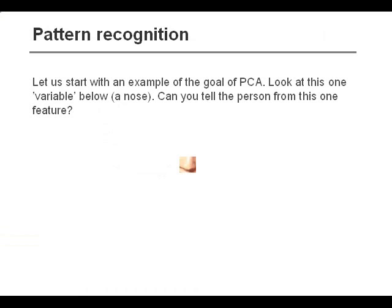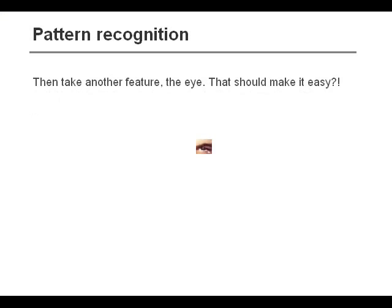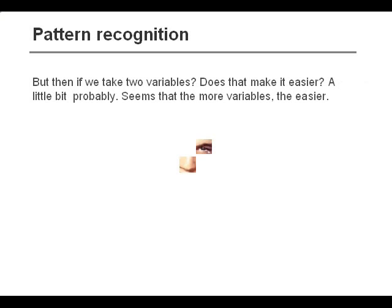Let's start with a simple example of how the brain works. If we want to recognize a face, we usually don't look at variables one at a time. Let's have a look at one variable or one feature — the nose — and try to figure out who that person might be. That's not very simple. But we could look at another feature, for example the eye, or we could look at both simultaneously. And even though it helps to look at both, it's not really simple to see which person it is.